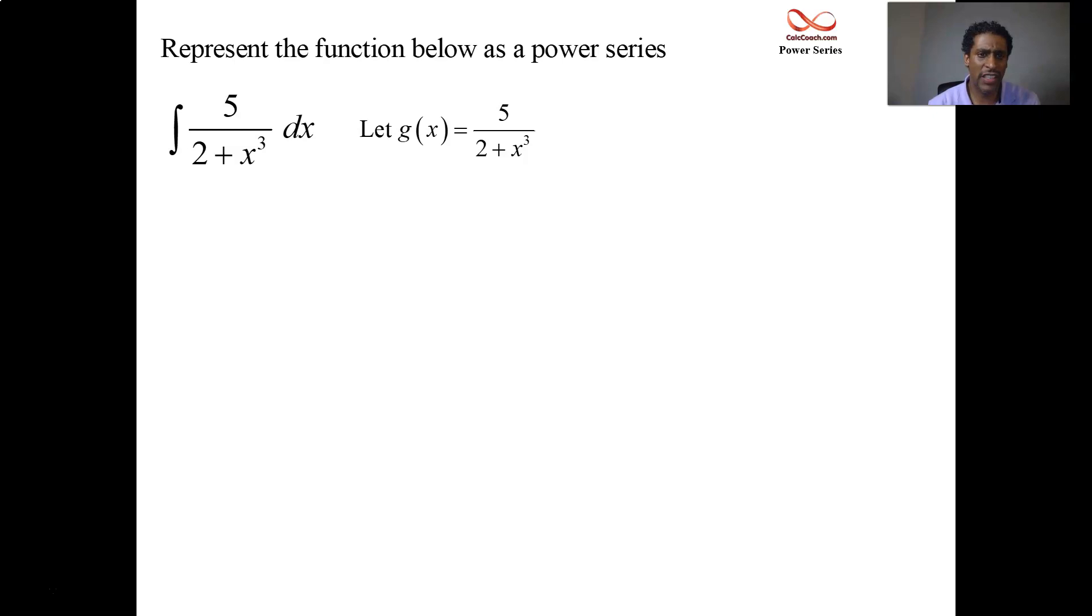It looks a lot like 1 over 1 minus x. But there's not a 1 in the numerator, not a 1 in the denominator, and not a minus after the 1. Those are the three things you have to go get in that order. The 1 in the numerator, let's go get that. How are we going to get it? Factor out the 5. The 1 in the denominator, that's the second guy you go get. Factor out the 2.